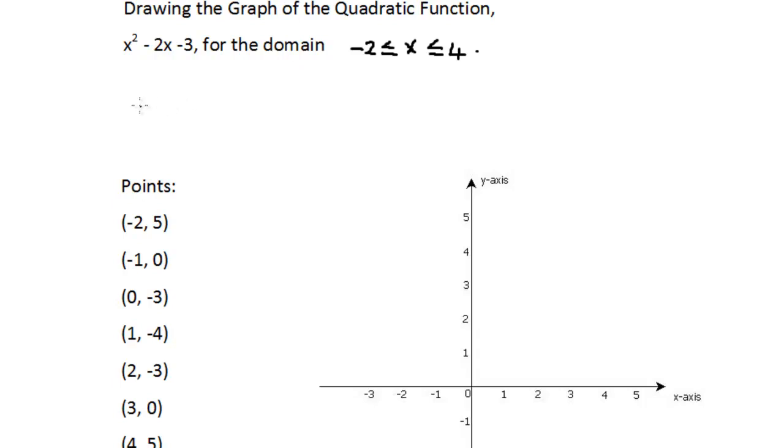So for example, for the domain value minus 2, what we did was substitute minus 2 in the equation x squared minus 2x minus 3, and we substituted minus 2 for x. So wherever we see an x in the equation, we put minus 2. And that gave us minus 2 squared minus 2 times minus 2 minus 3.